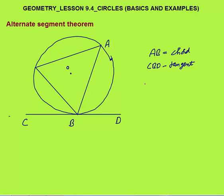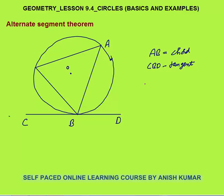Next is the alternate segment theorem. If AB is a chord and CBD is a tangent at point B, then the angle made by the chord with the tangent — call it X — equals the angle made by the same chord in the alternate segment. That angle in the alternate segment will also be equal to X.